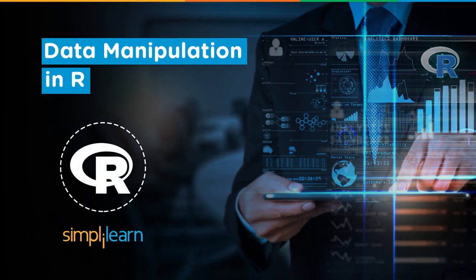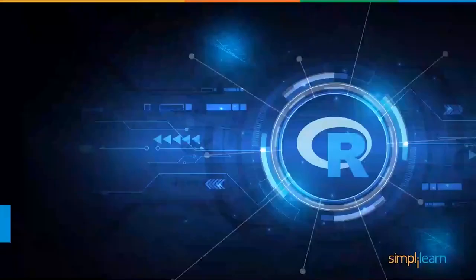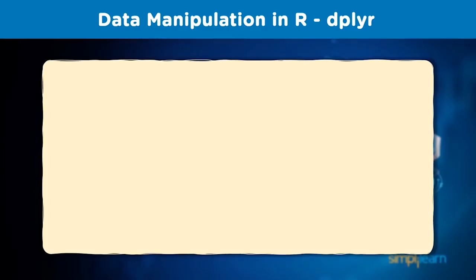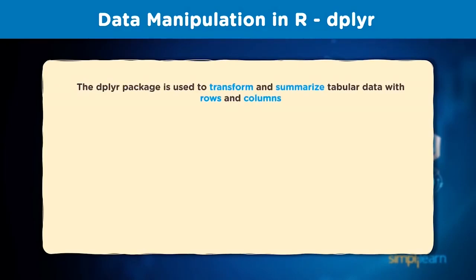Hi everyone, welcome to this section of R programming. Let's learn about data manipulation in R, and here we will learn about the dplyr package. It is much faster and much easier to read than base R. The dplyr package is used to transform and summarize tabular data with rows and columns. You might be working on a data frame or an inbuilt R dataset, which can then be converted into a data frame. We can get this package by just calling the library function.